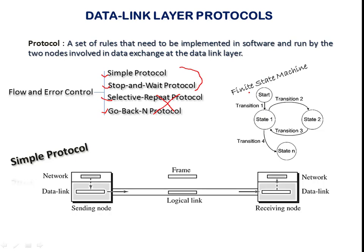We can understand the behavior of data link layer protocols using a finite state machine (FSM). A finite state machine has different states that represent events occurring in the machine. Once the machine is on, from the initial state — here 'start' is the initial state — based on the event that occurs, a transition happens from one state to another.